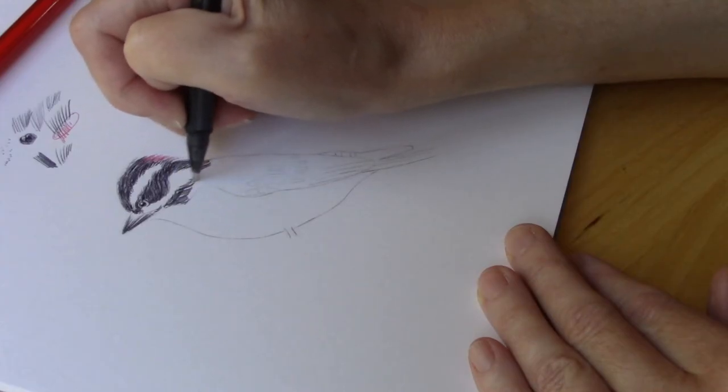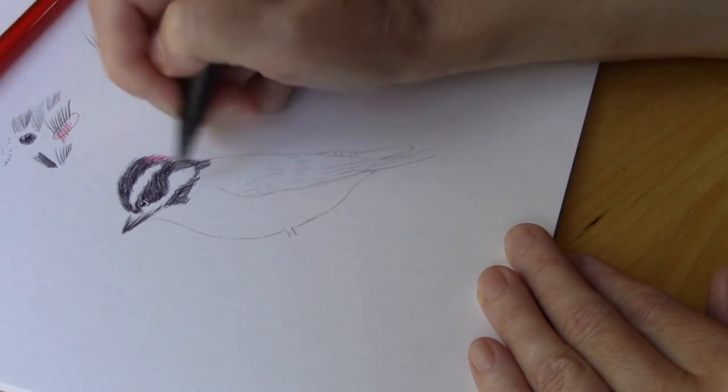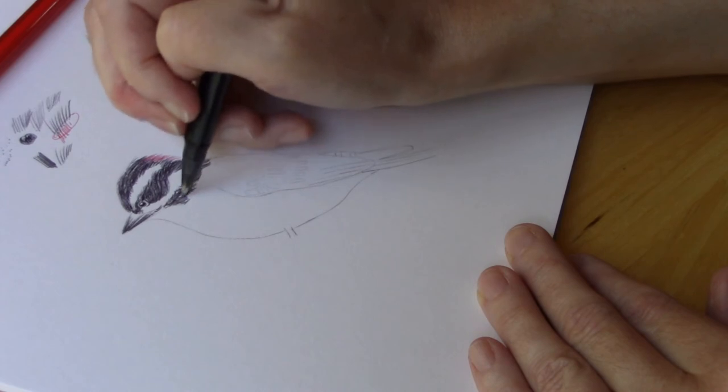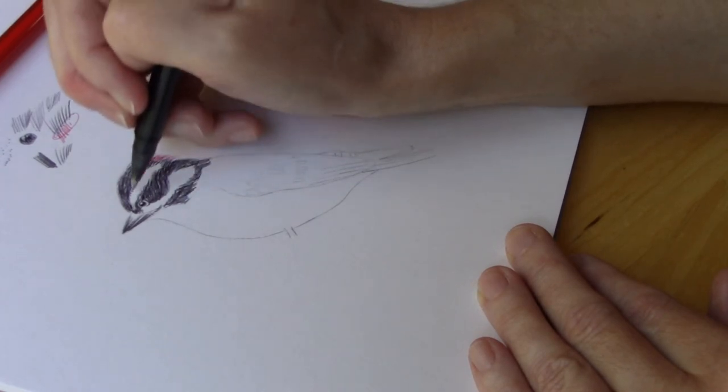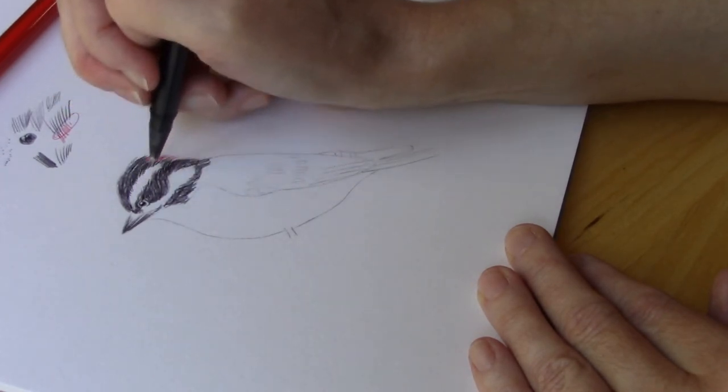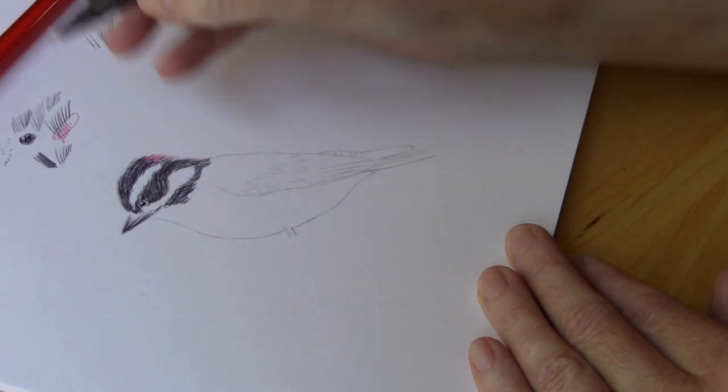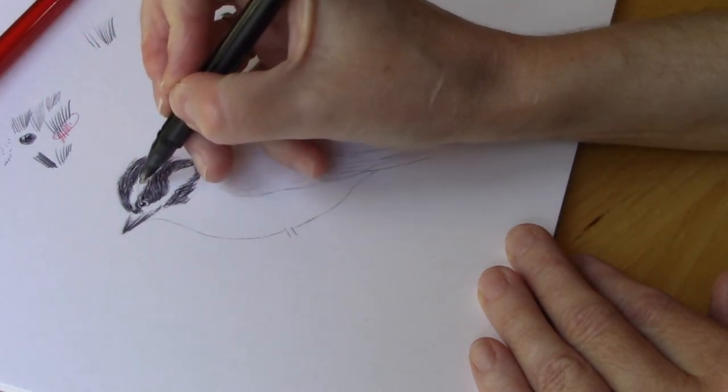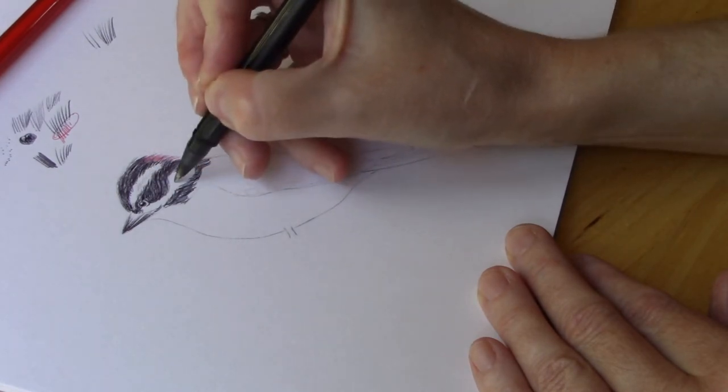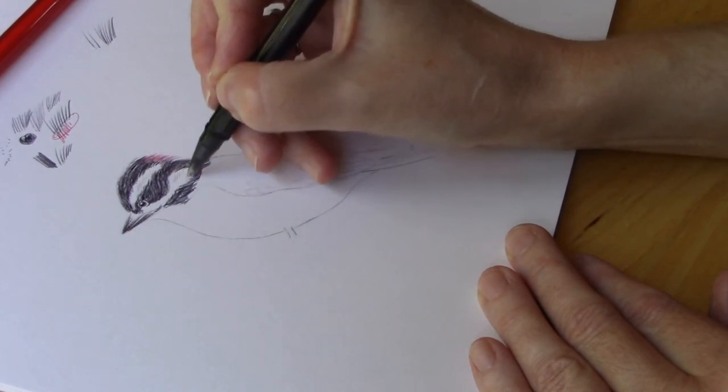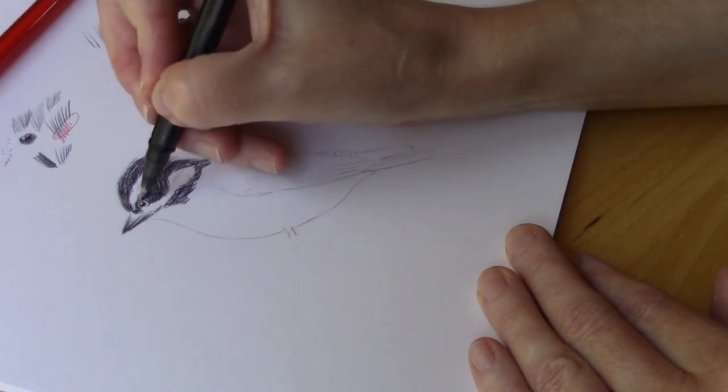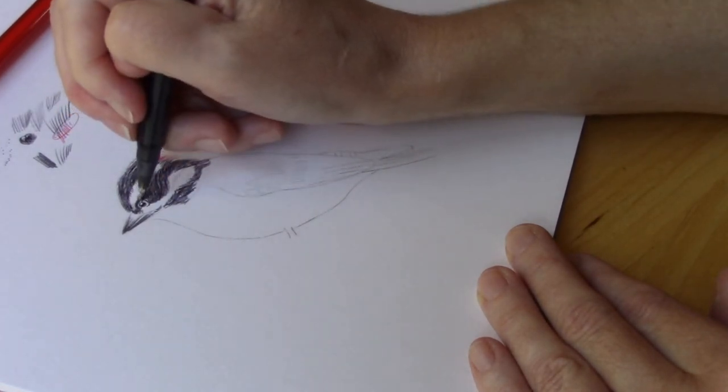Right now I've been applying pretty much the same amount of pressure on my pen. But what I want to do is, I don't want this white patches to be so solid white. So what I'm going to do is with very, very light pressure on my pen, I'm just going to make a few little lines just to break up that white so it's not so solid.